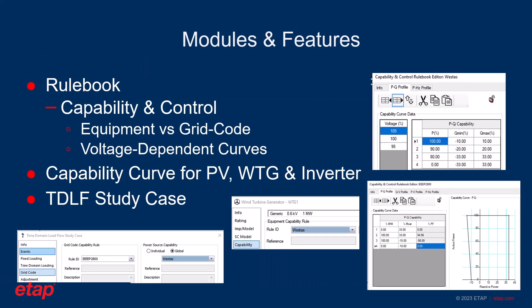As part of the modules and features that ETAP solution provides, we have the rulebook, where the capability and control of the grid code can be selected. If a particular grid code is not already defined in the rulebook, the user can enter the numbers manually and consider a customized rulebook during their studies.